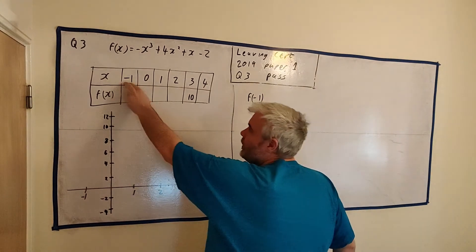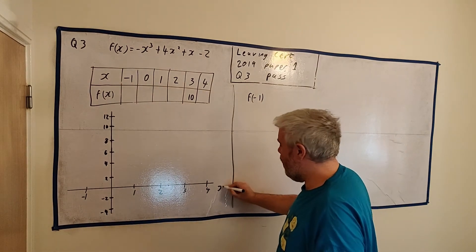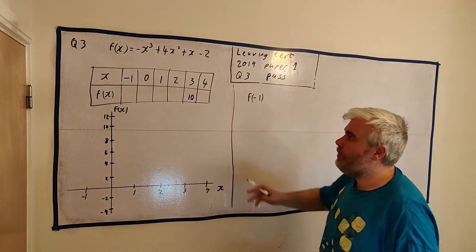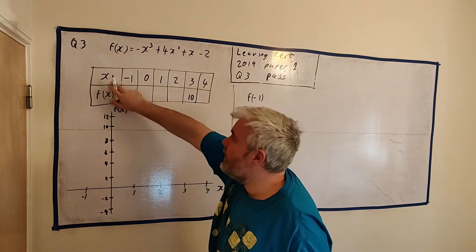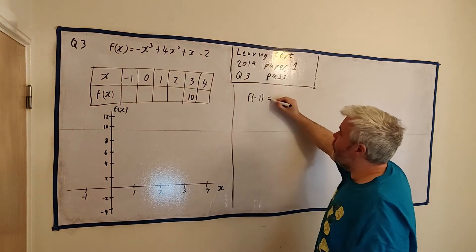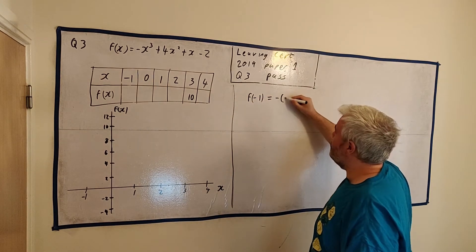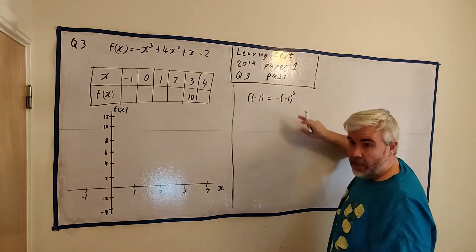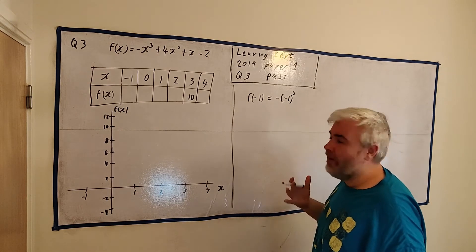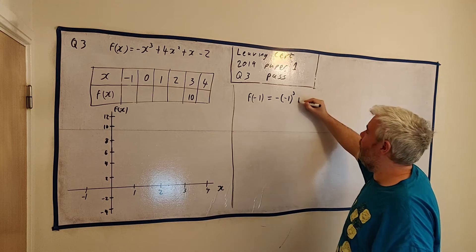Basically, a function means we put the x number in and we get an answer out. These are our x and f(x) values — function in, function out. So let me go through how to fill in this table. They tell us x is equal to minus 1, so what we need to do is put x equal to minus 1 into this function. Everywhere we see an x, we replace it with minus 1. For safety, put it in brackets every time. It's important when we have a minus 1, otherwise we could lose the minus. It never hurts to put that bracket in for an extra bit of safety.